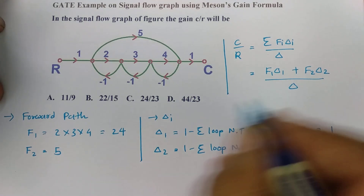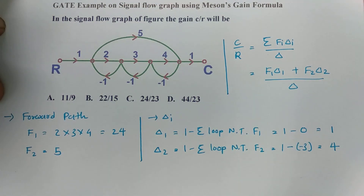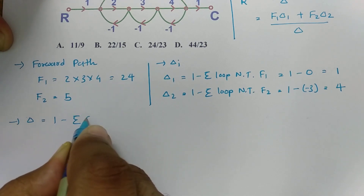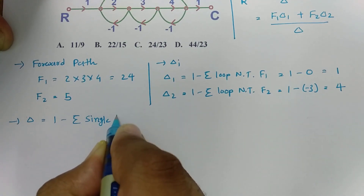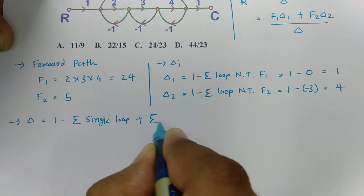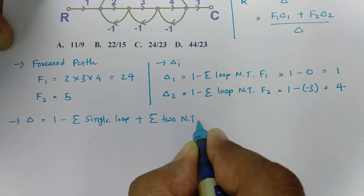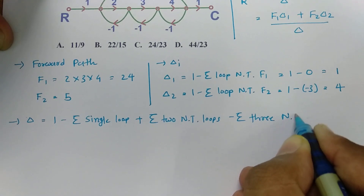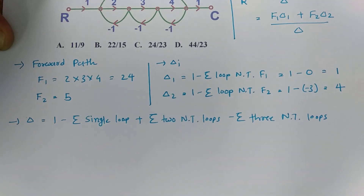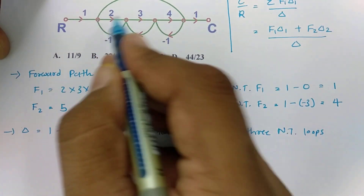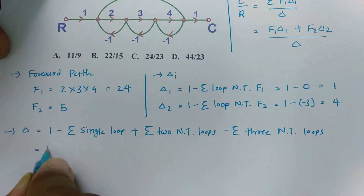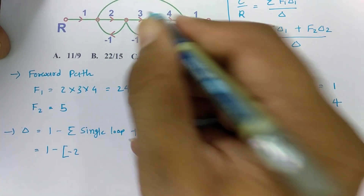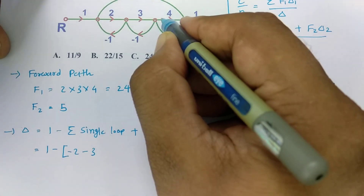Now we need to calculate delta. We already have F1, F2, delta1, and delta2. The basic formula for delta is: 1 minus summation of single loops plus summation of two non-touching loops minus summation of three non-touching loops. There are three loops here. So I am writing: 1 minus, first loop is 2 into minus 1 equals minus 2; second loop is 3 into minus 1 equals minus 3; third loop is 4 into minus 1 equals minus 4.